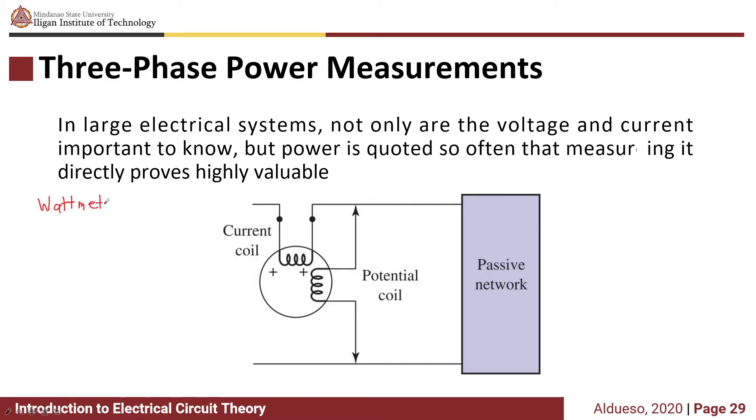A wattmeter has a current coil and a potential coil. The current coil is connected in series with the line, and the potential coil is connected in parallel with the line or between two lines.